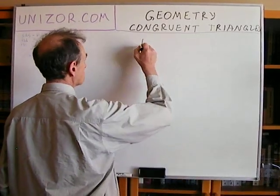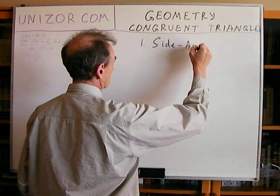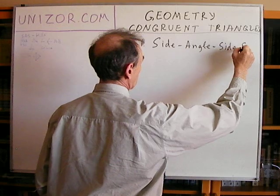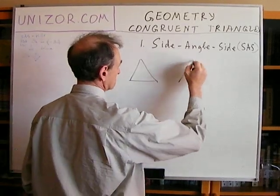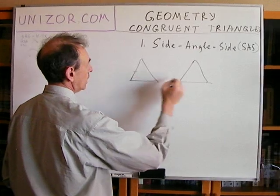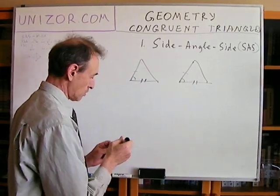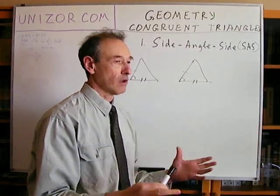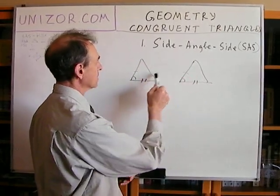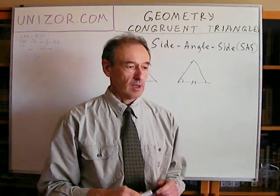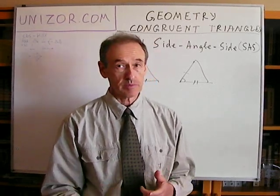The first statement is called Side-Angle-Side, or SAS. It means that if you have two triangles and you have two sides congruent to each other, and an angle between them as well, then the triangles are congruent — which means everything else will be the same. Statements can be either axioms, which we accept without proof, or theorems, which we must prove.